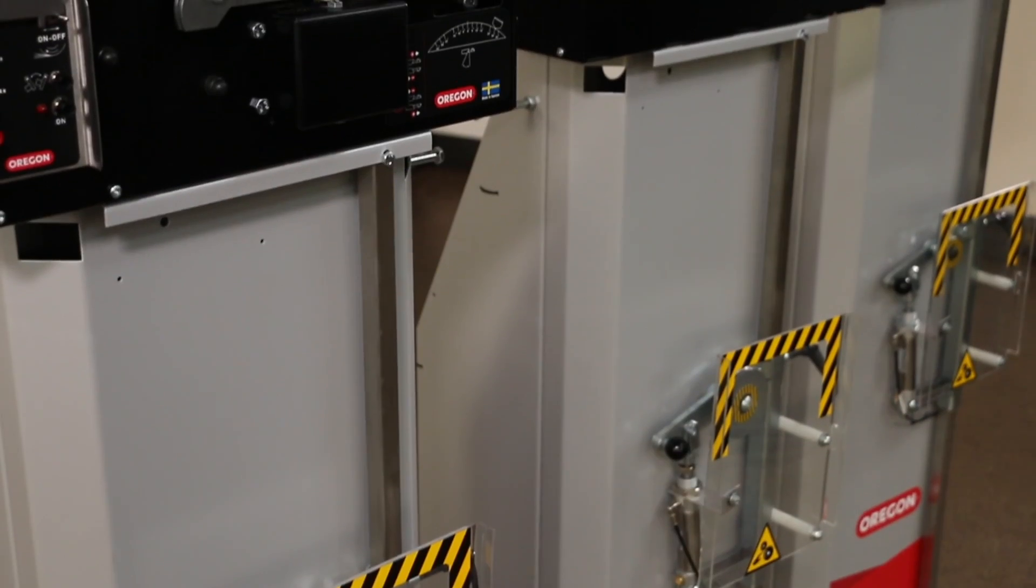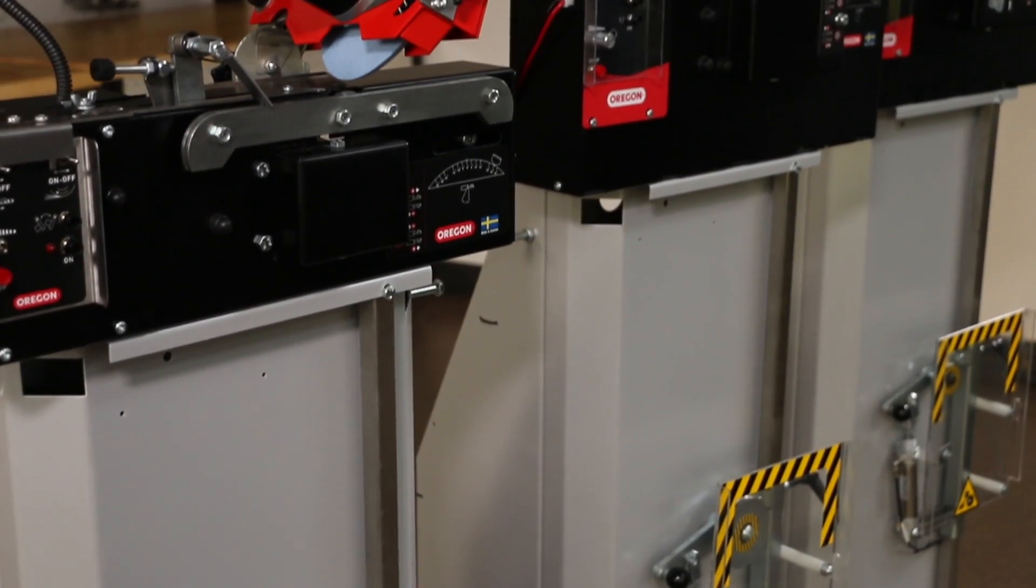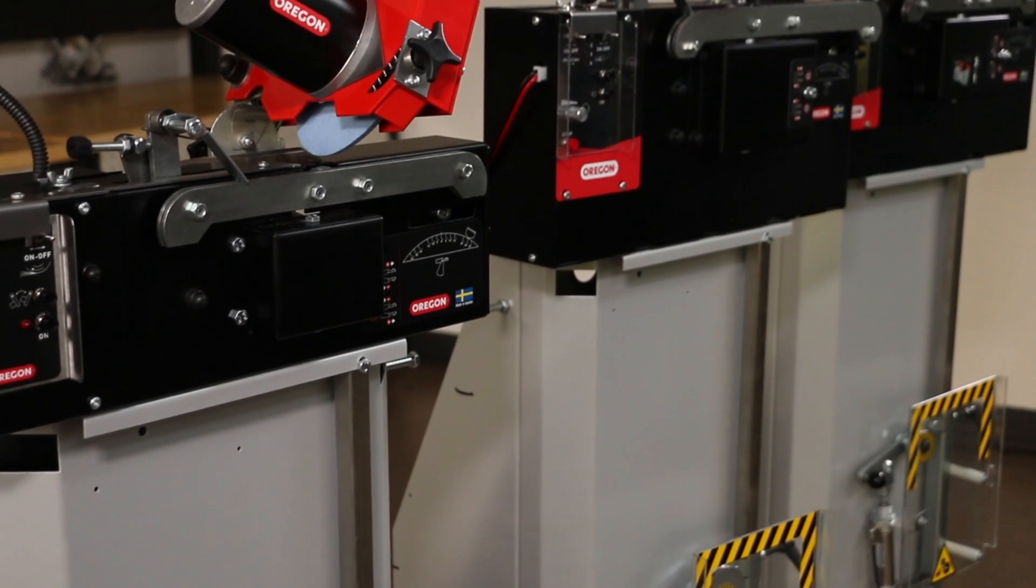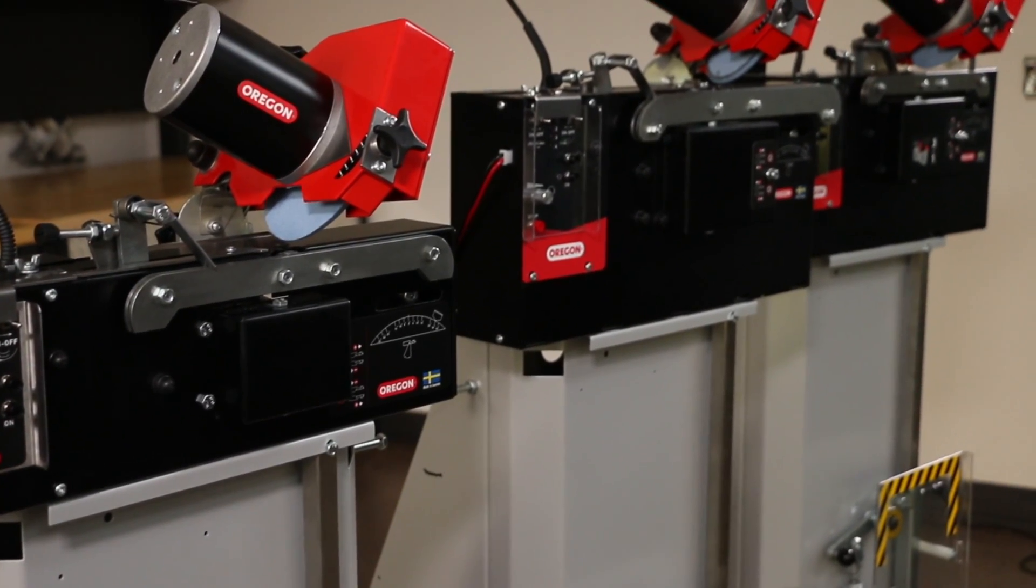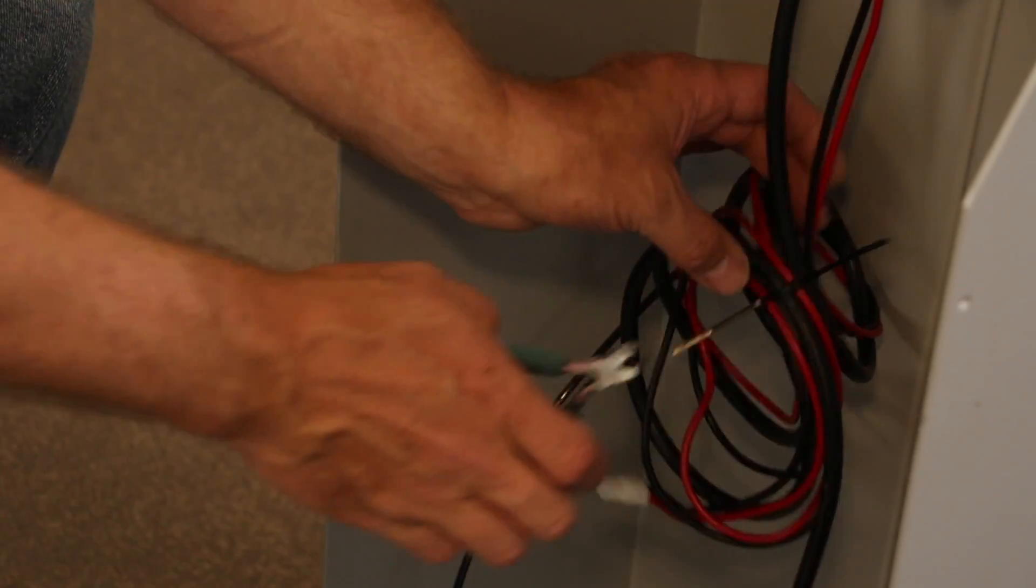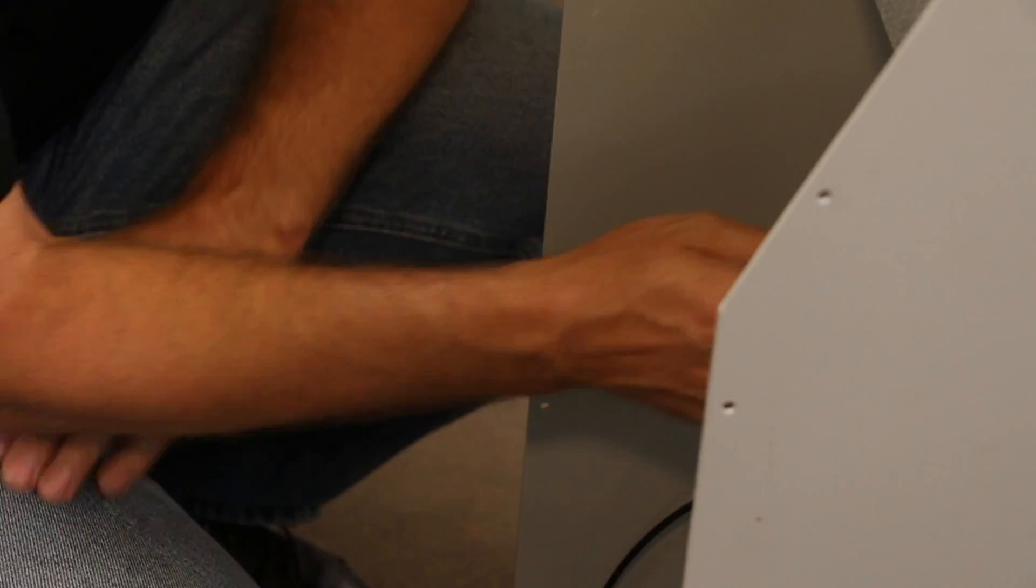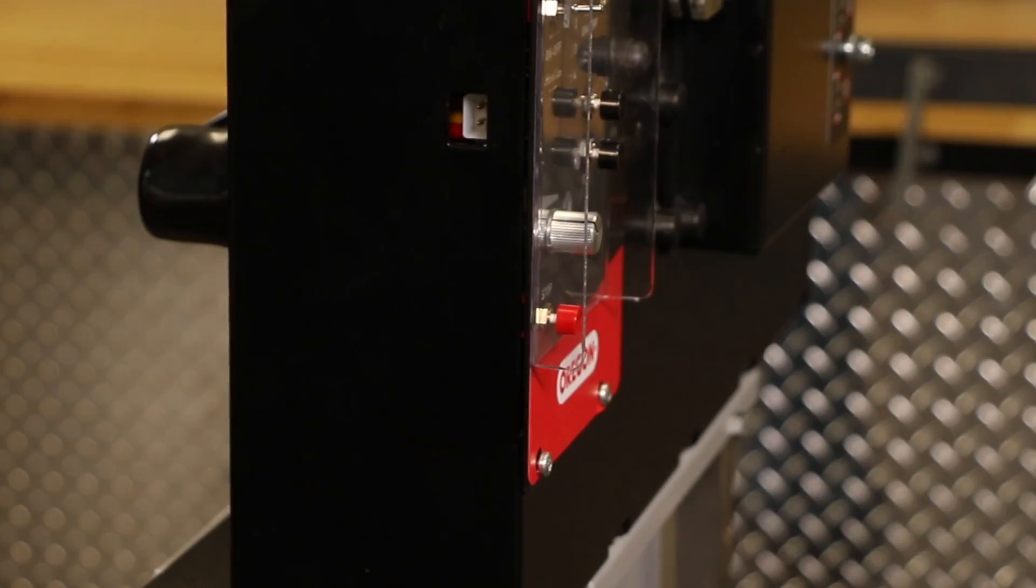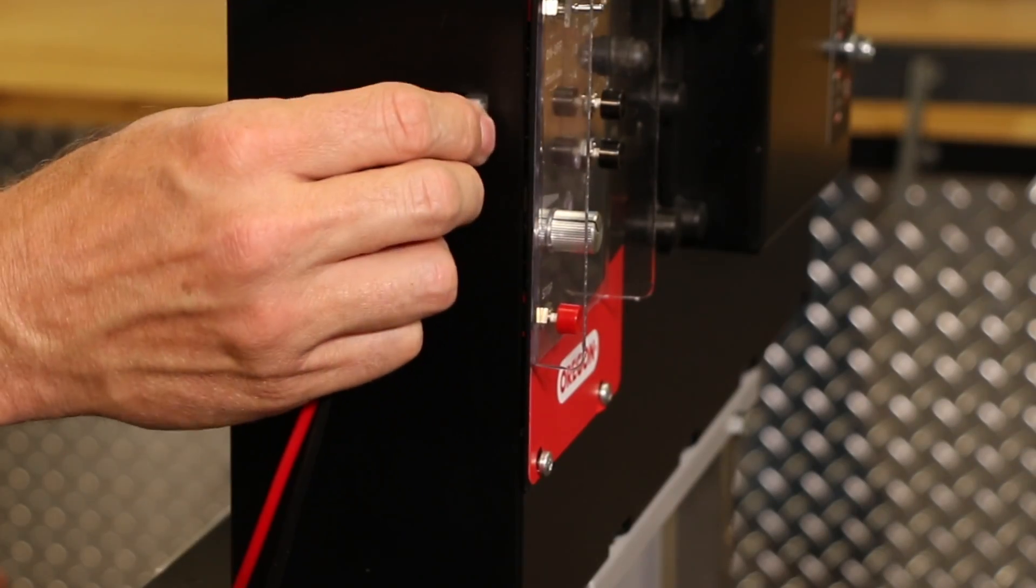The 710 model requires three bolts, one in front and two in the back, while the 720 and 730 models require four, two in front and two in the back. To connect the AC-DC converter, simply insert the connector on the black and red wires into the control panel on the left-hand side of the grinding unit.